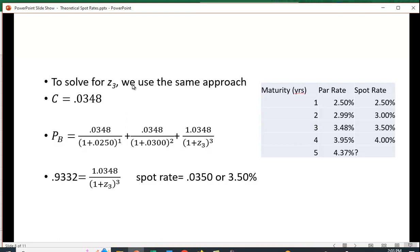To solve for Z3, we use the same approach. We take the coupon for year 3, 3.48%, which would be 0.0348, for three periods. We're going to discount by the spot rate for year 1, the spot rate for year 2, and then we're going to solve for the spot rate for year 3.